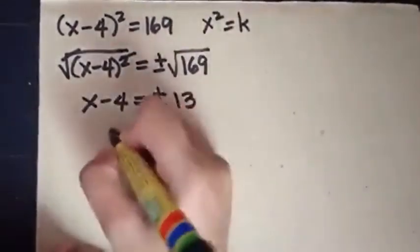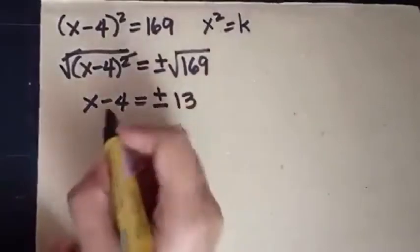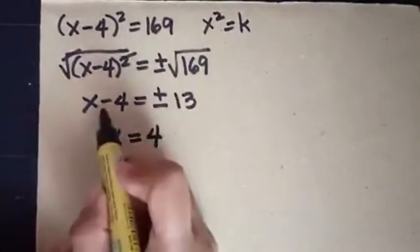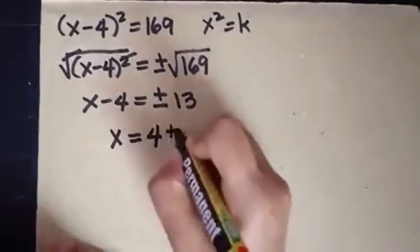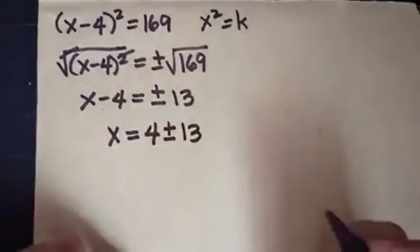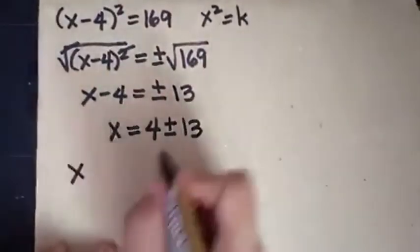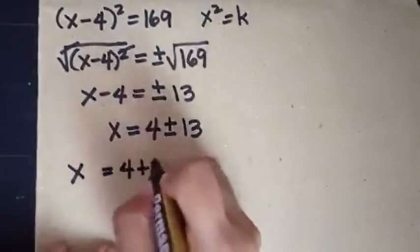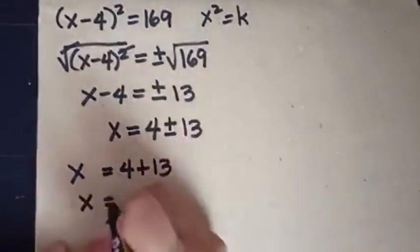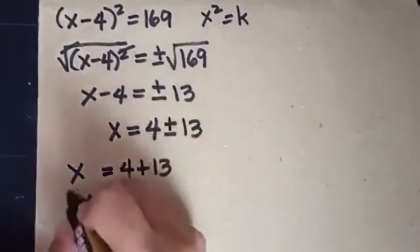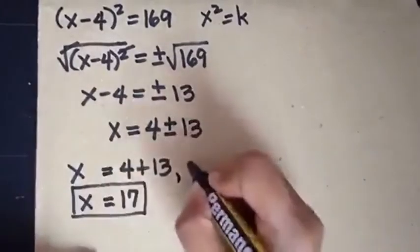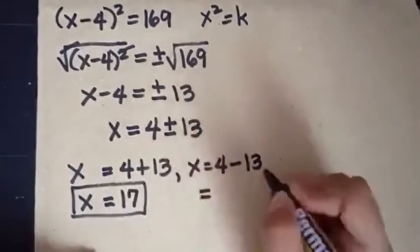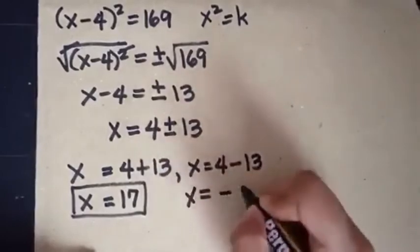We solve for x by transposing negative 4 to the other side, so x equals 4 plus and minus 13. For the first value: 4 plus 13 equals 17. For the second value: 4 minus 13 equals negative 9.